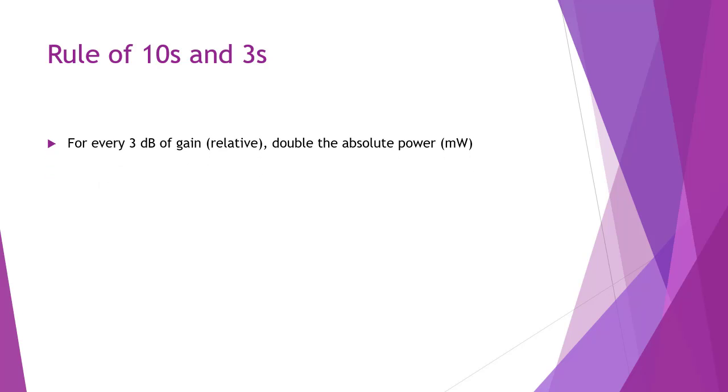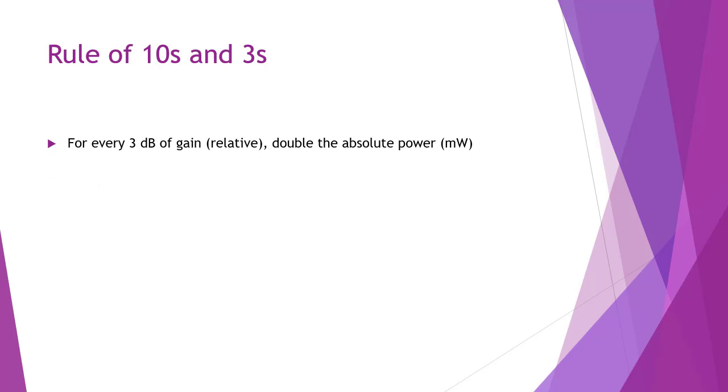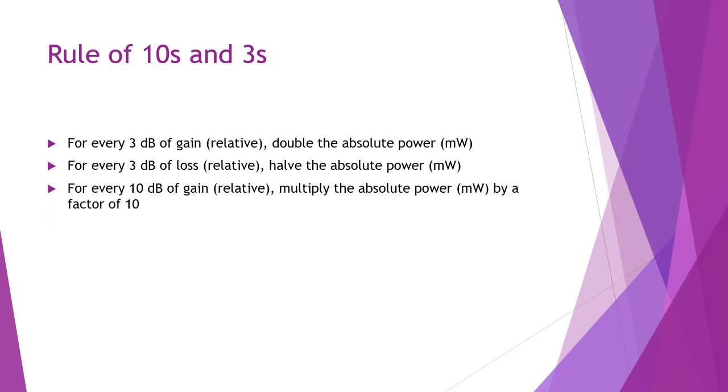For every 3 dB of gain, that is a relative measurement, you are going to double the absolute power. So that's a multiplication by 2, and that answer will be in milliwatts. For every 3 dB of loss, that is again a relative measurement, you're going to take half of the absolute power, so that's a division by 2, and that answer will be in milliwatts. For every 10 dB of gain, you are going to multiply the absolute power by a factor of 10, and for every 10 dB of loss, you are going to divide the absolute power by a factor of 10. This is the rule of 10s and 3s, or 3s and 10s.